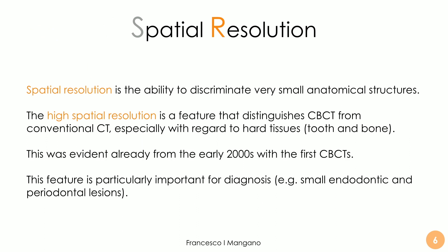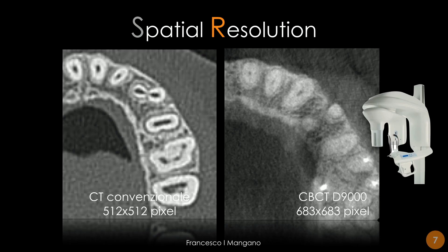High spatial resolution is a feature that distinguishes CBCT from conventional medical CT, particularly with regard to hard tissues — teeth and bone. This was immediately evident from the first studies made in the early 2000s. CBCT has an incredible diagnostic potential; for example, we can discriminate very small endodontic or periodontal lesions that were not possible to see even with medical CT. This picture clearly shows the higher spatial resolution of CBCT compared to conventional medical CT.